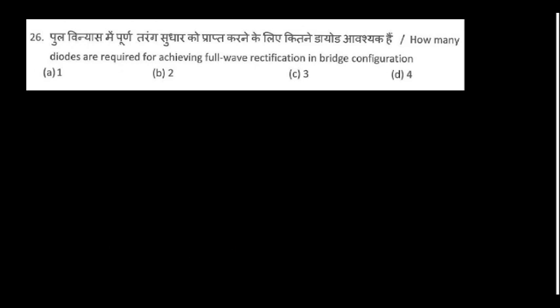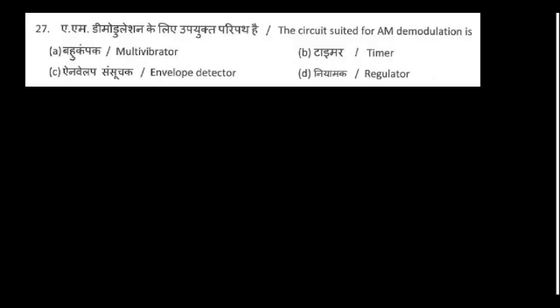How many diodes are required for achieving full-wave rectification in bridge configuration? This is a very simple question: four. The circuit suited for AM demodulation is envelope detector.